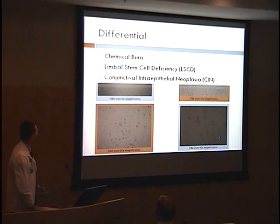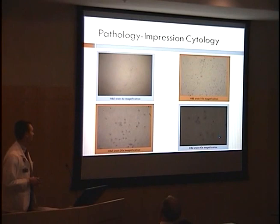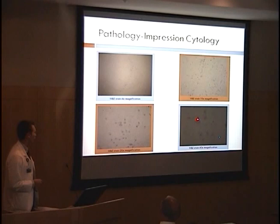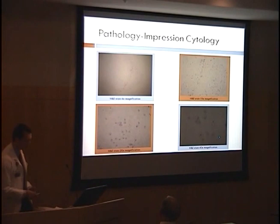Impression cytology was done on this patient because there were questions as to whether he really had CIN. An H&E stain was done and examined under light microscopy. As you can see, there's fairly normal squamous non-keratinized epithelium with normal nucleus-to-cytoplasm ratio. There are no mitotic figures and no chromatin clumping. The final diagnosis on impression cytology was no signs of dysplasia.